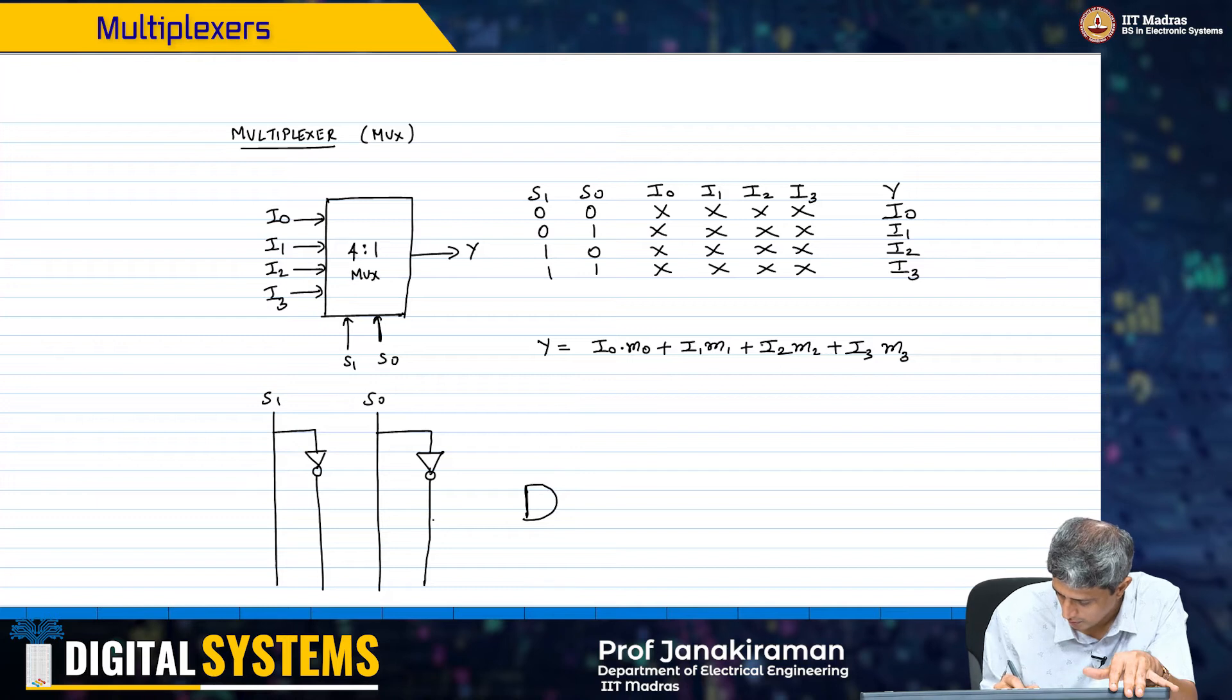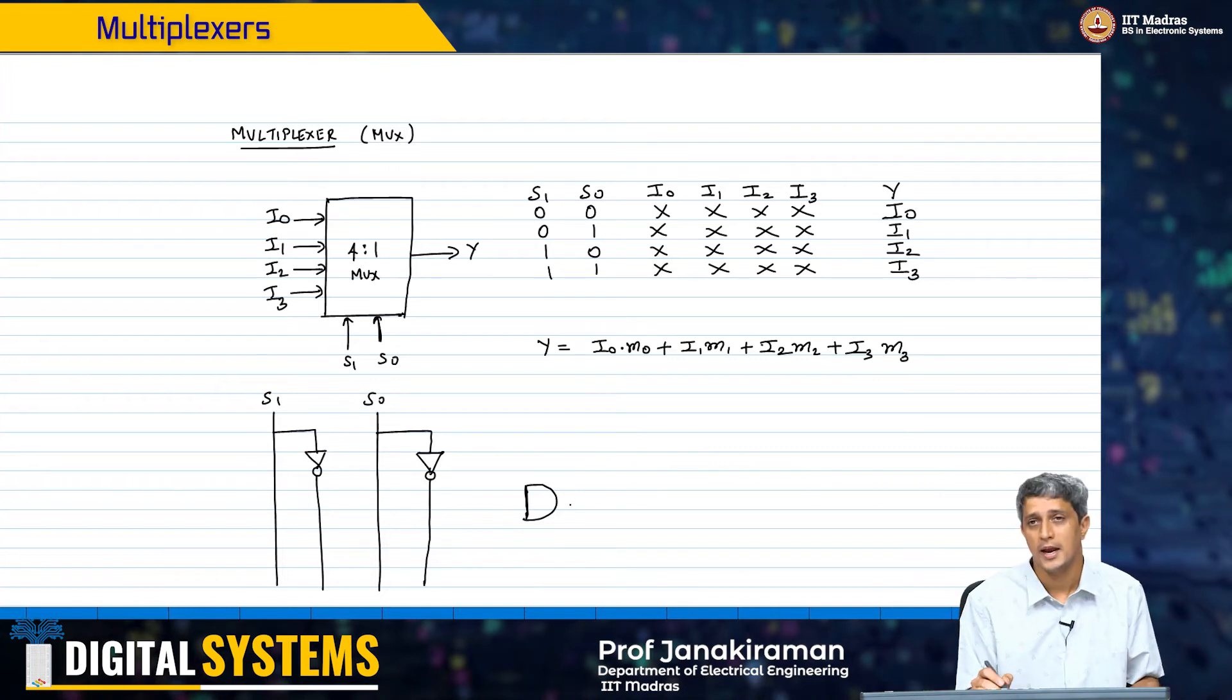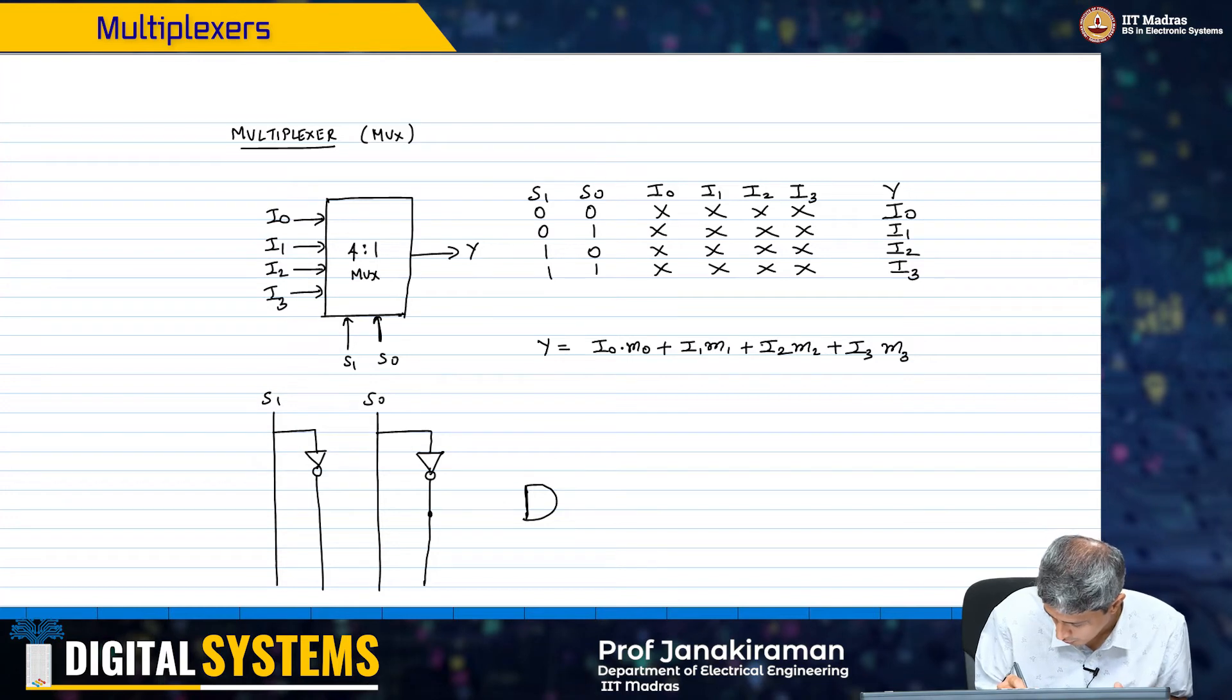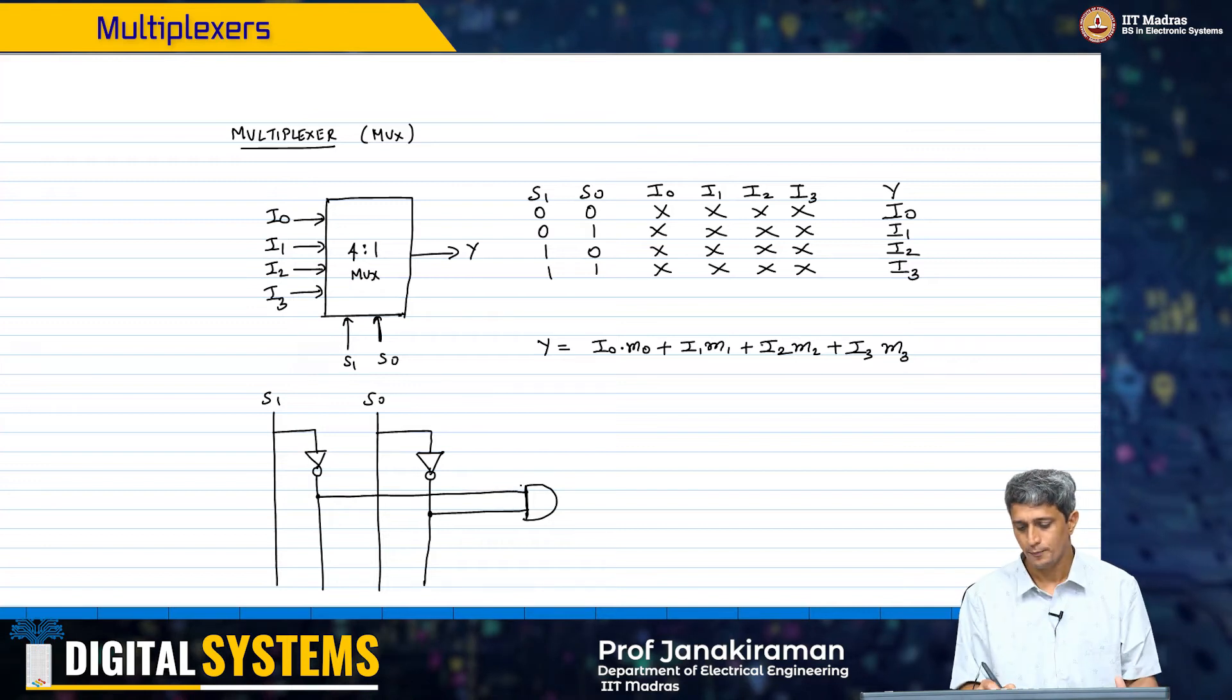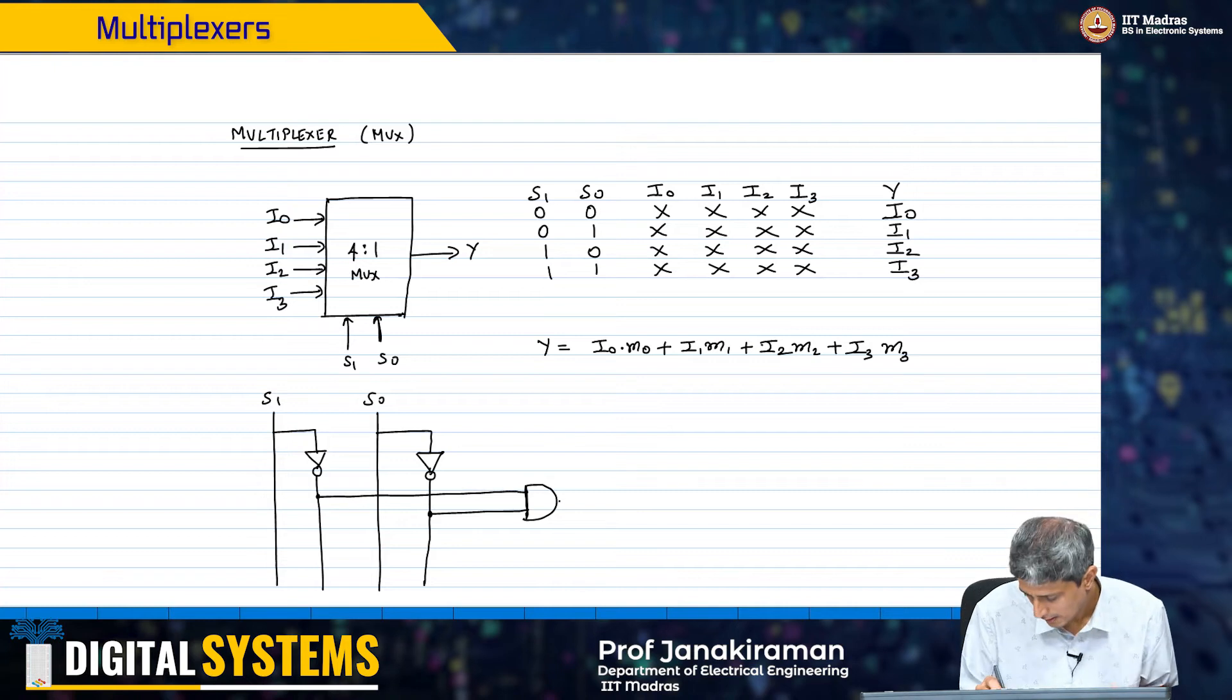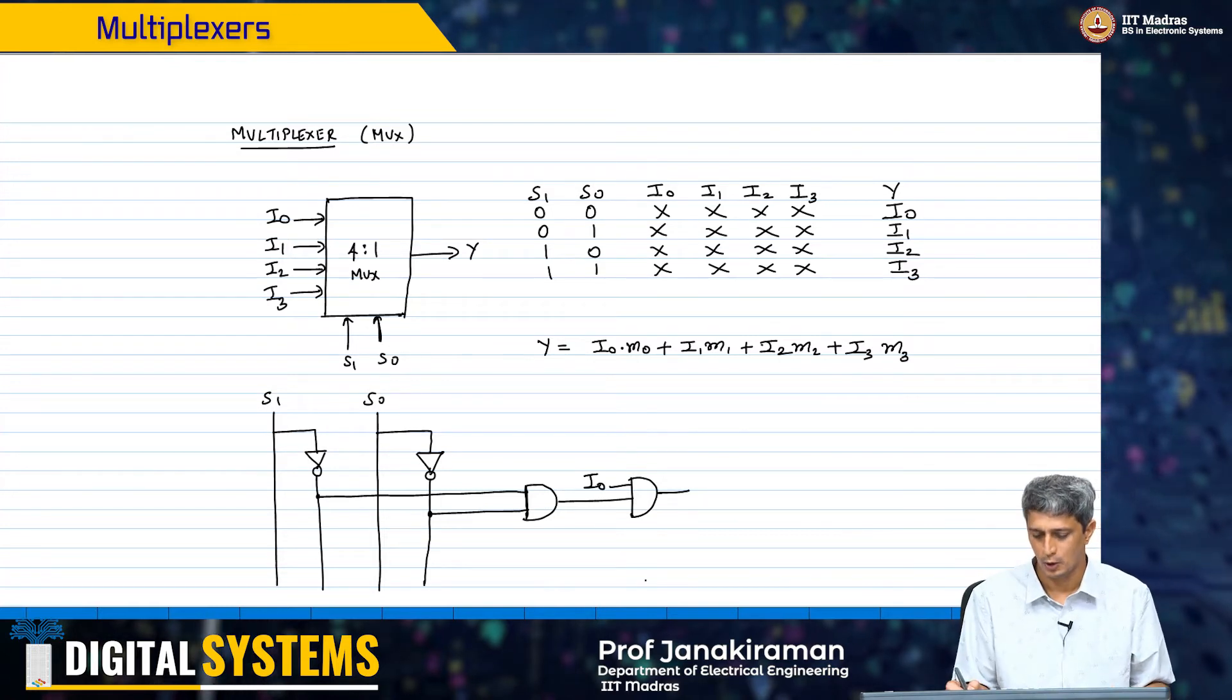Now, M0 is going to be, again this could be implemented in different ways. I could first generate M0 using a 2 input AND gate if I wish. This is what I have. And I could